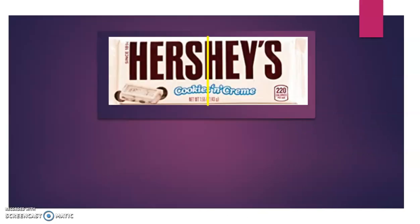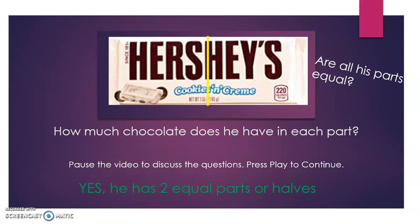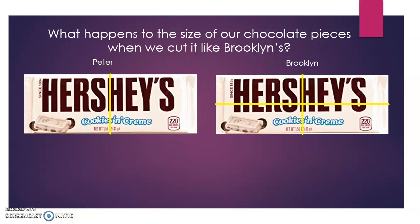Let's look at Peter's chocolate bar. Are all his parts equal? How much chocolate does he have in each part? Pause and discuss, then press play. Yes, he does have equal parts — he has two equal parts, or halves. So when we cut Peter's chocolate bar, we got two halves or two equal parts.